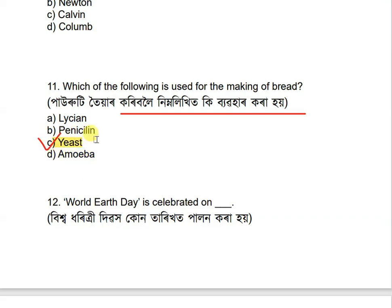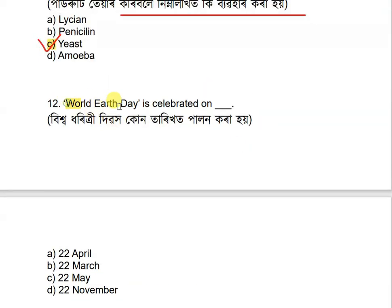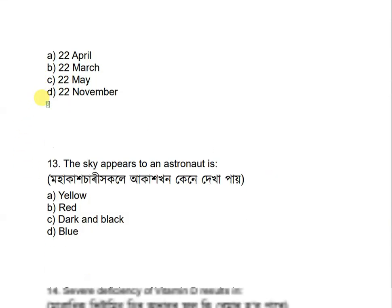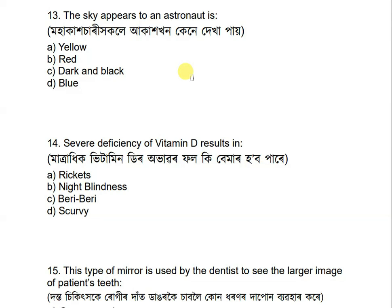Question 12: World Earth Day is celebrated on which date? Options are: 22nd April, 22nd March, 22nd May, and 22nd November. The correct answer is 22nd April — World Earth Day is celebrated on 22nd April.